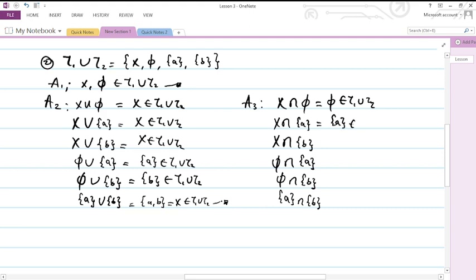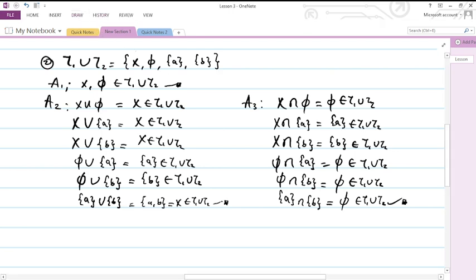We have {a} ∩ {b} = ∅ which is a member of T₁ ∪ T₂. We have set {a}, which is a member of T₁ ∪ T₂. We have set {b}, which is a member of T₁ ∪ T₂. We have empty set, which is a member of T₁ ∪ T₂.